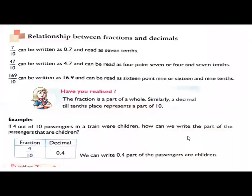Today we are going to discuss what is the relationship between fractions and decimals. So, fractional number 7 by 10 can be written as 0.7 because it is 7 by 10. The number can be written as 0.7 because in 10th position we write the numerator number. So 0.7 can be written as 7 tenths and next 47 by 10.